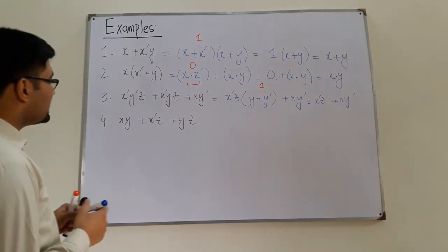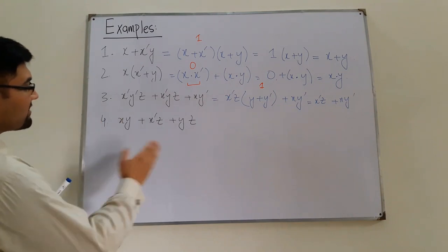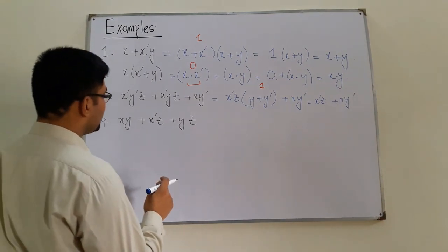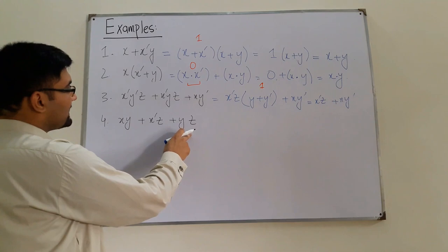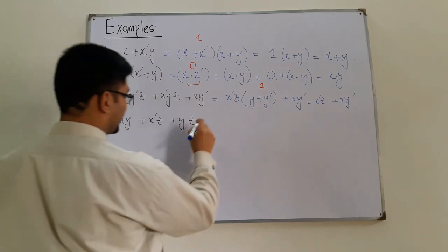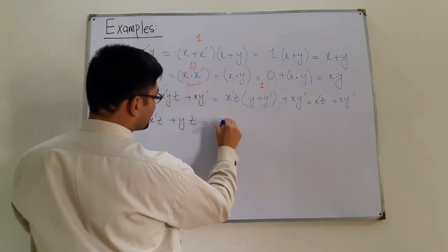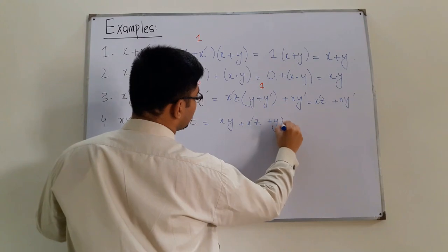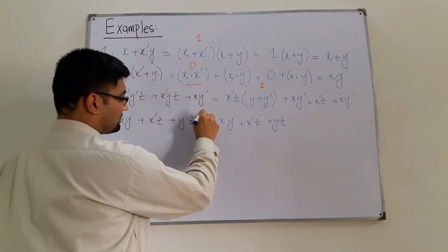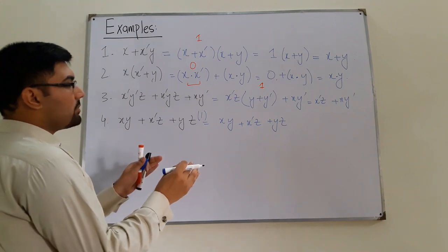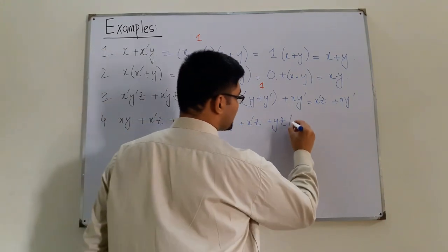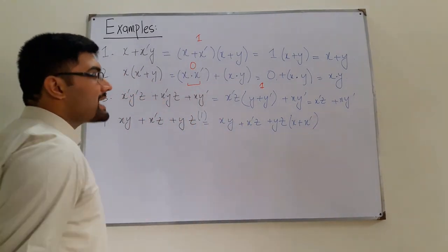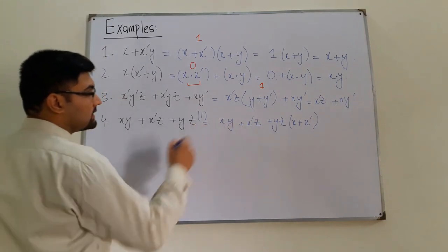Have a look. In the first term we have x and y, then we have x and z, and then we have y and z. I can solve it by two methods — by introducing y over here or by introducing an x over here. So I introduce x over here. This would be xy plus x complement z plus yz. This is yz into 1, and anything ORed with its complement is again 1, so if I write x plus x complement that is the same thing as 1. So I have introduced x by that means.